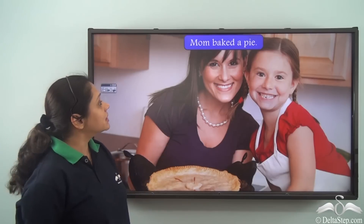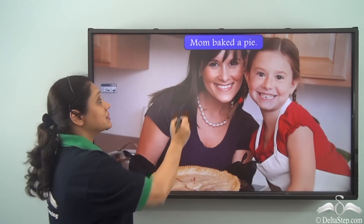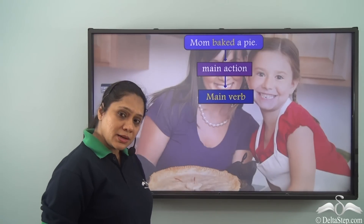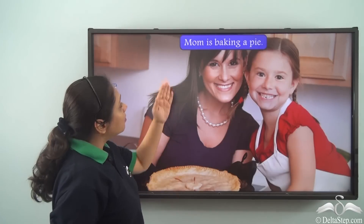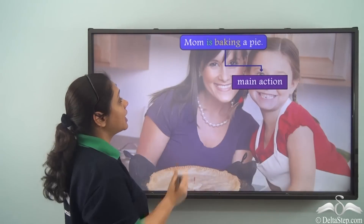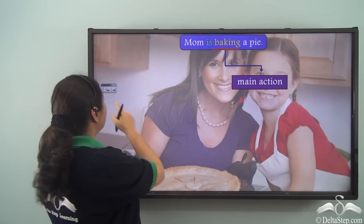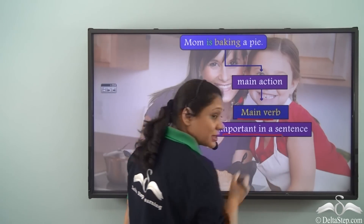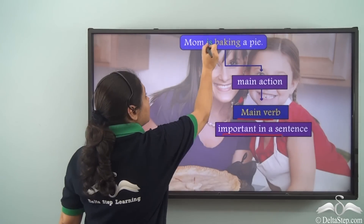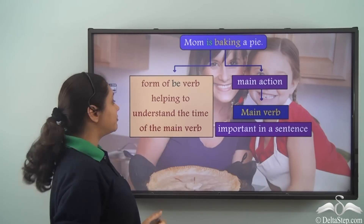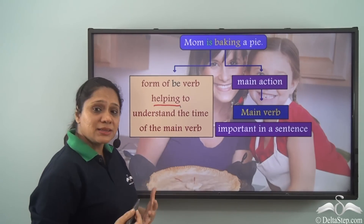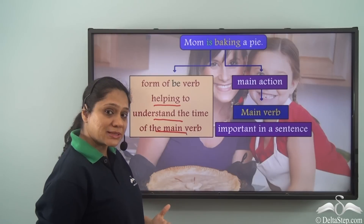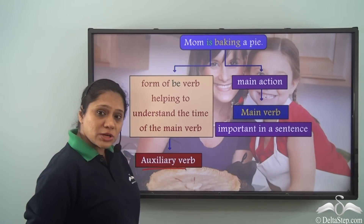Let us read this sentence: 'Mom baked a pie.' The word 'baked' is showing the main action, hence it is the main verb. But if I say 'Mom is baking a pie,' then 'baking' is the main verb. The word 'is' is a form of the be verb, which is helping us to understand the time of the main verb — it is happening right now in the present. Hence 'is' is an auxiliary verb.